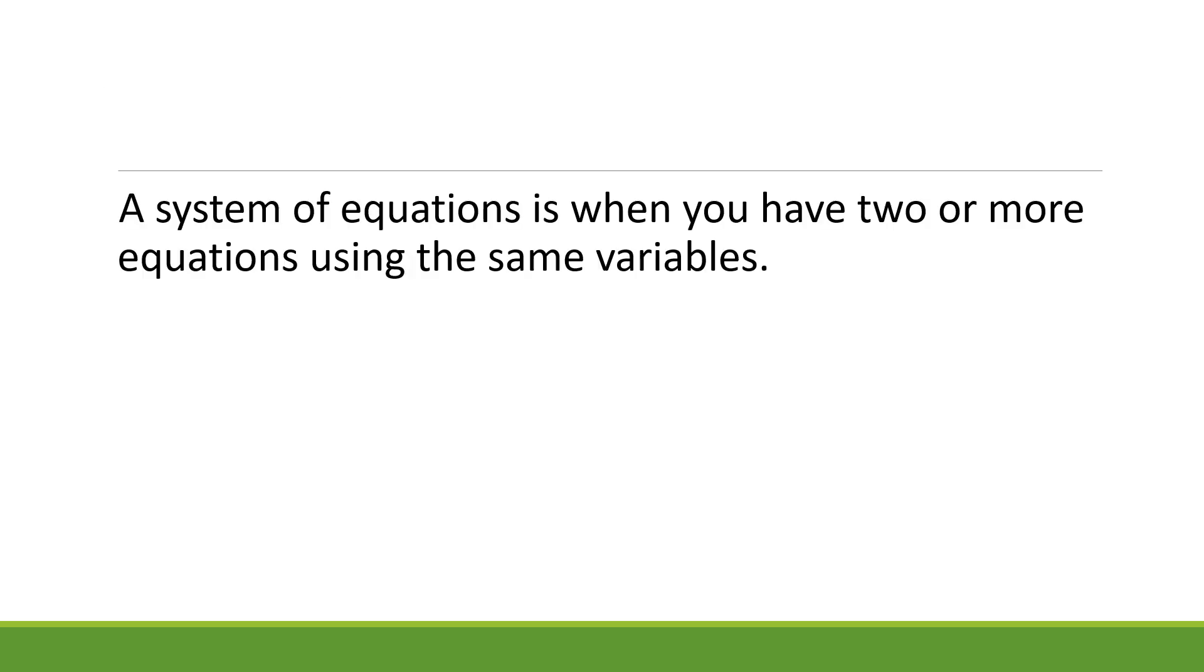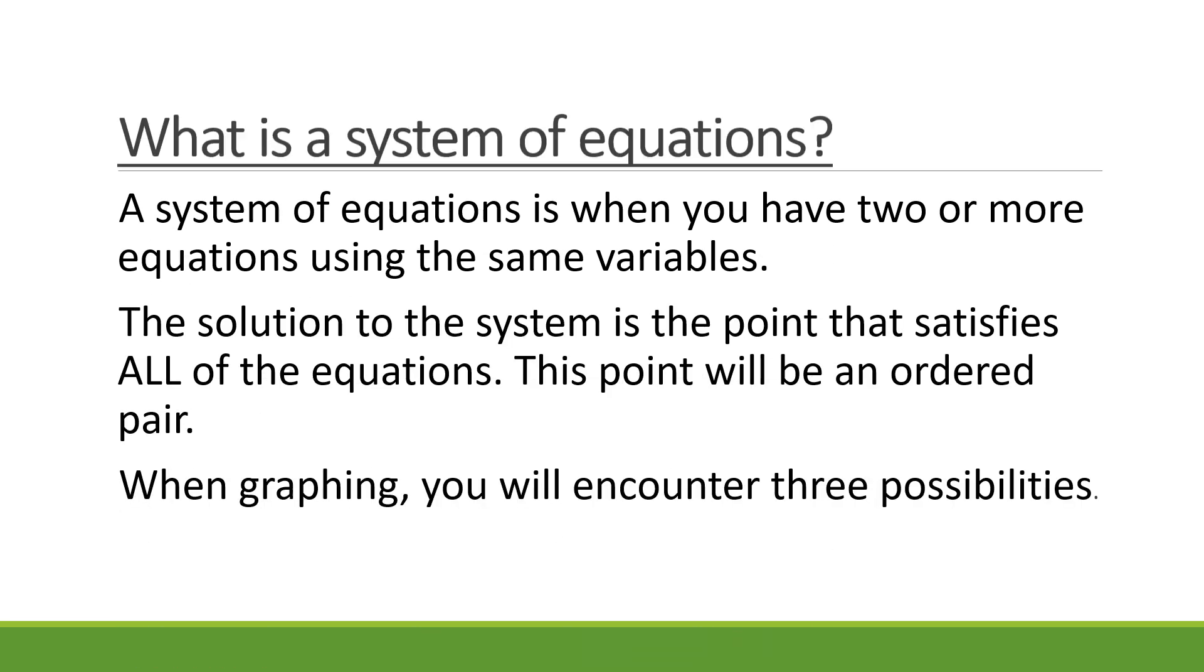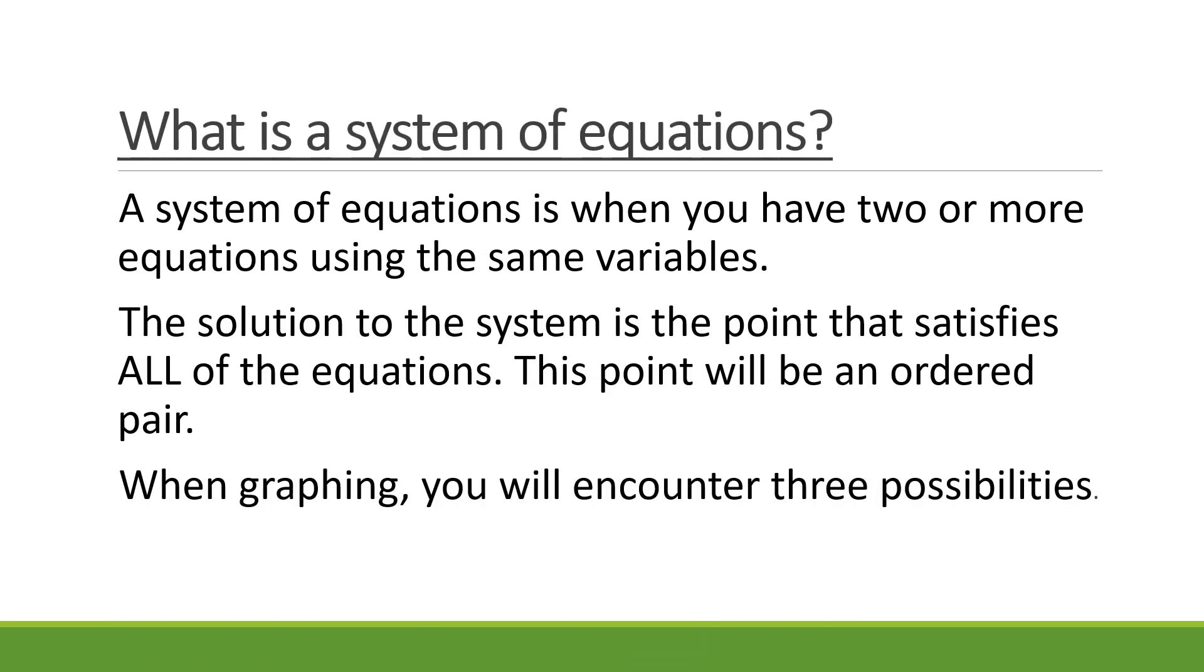Now, what is a system of equations? A system of equations is when you have two or more equations using the same variables. The solution to the system is the point that satisfies all the equations. This point will be an ordered pair. When graphing, you will encounter three possibilities.